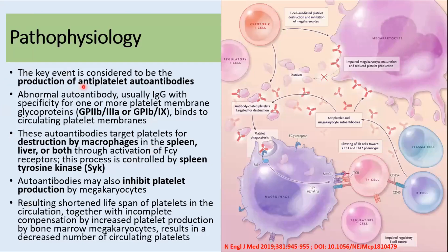The key event in the pathophysiology is the production of antiplatelet autoantibodies. These autoantibodies usually bind to circulating platelet membranes, and they are mostly specific to platelet membrane glycoproteins like glycoprotein 2b3a or glycoprotein 1b9. These autoantibodies target the platelets for destruction by macrophages in the spleen, liver, or both, through activation of the Fc receptors, and this process is controlled by spleen tyrosine kinase.